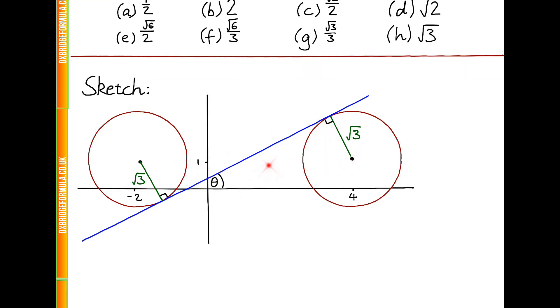Now, we also know that the centres of both of these circles lie on points which have y equals 1, so we can join up these two centres,